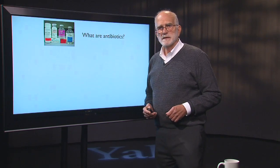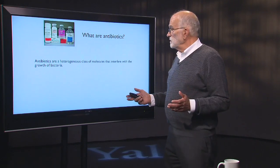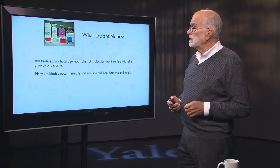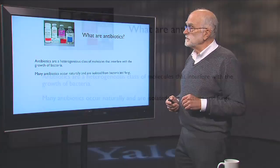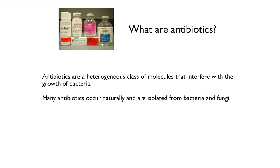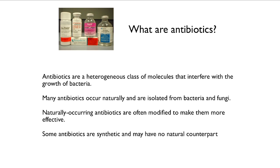So what are these antibiotics anyway? Well, they are many different kinds of molecules that interfere with bacterial growth. Many of them occur naturally — many of them are actually produced by bacteria and fungi. And that's important because bacteria and fungi have been around for a long time, which means that antibiotic resistance has had a long time to evolve. The way that we produce them is often to take a naturally occurring antibiotic and modify it. And some antibiotics are fully synthetic, and they may have no natural counterparts. So it's a heterogeneous group of things.